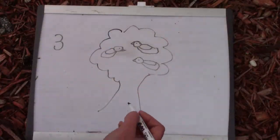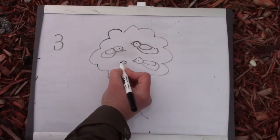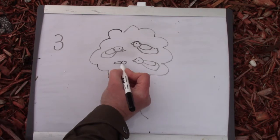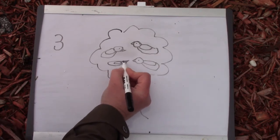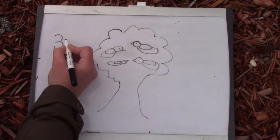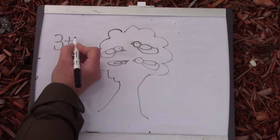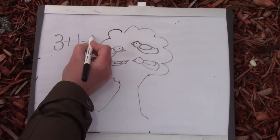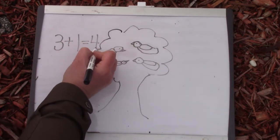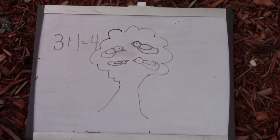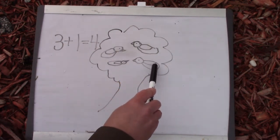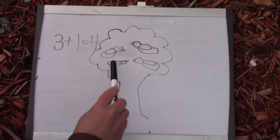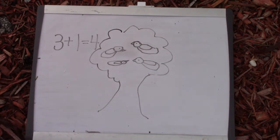Well class, I have three birds in my tree and I think I'm going to get one more. Three plus one equals four. Our drawing doesn't need to be perfect for us to be able to count: one, two, three birds plus one more — four.